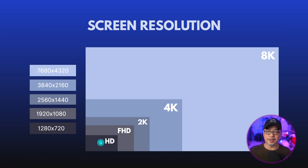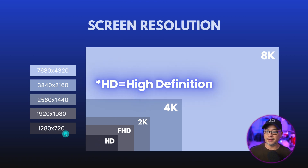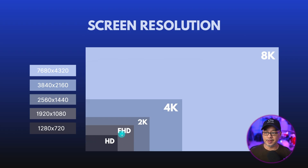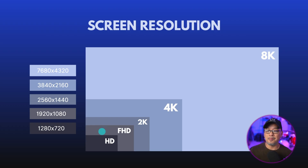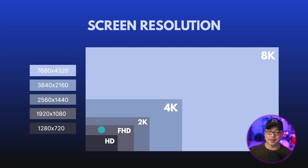Regular HD resolution is 1280 by 720. Full HD is 1920 by 1080. Most of the video models we have on OpenArt max out at 1080p. This is where the upscaler comes in very handy, because now we can go all the way up to 2K, which is 2560 by 1440.